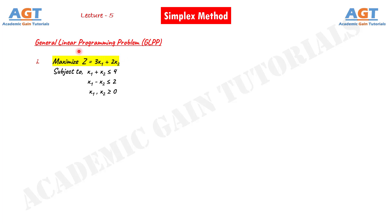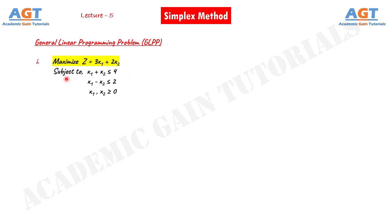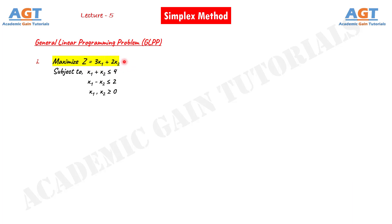The question is, in our previous lectures we have already seen that we can solve this problem using graphical method. Then why do we even need to use simplex method for solving the linear programming problems? If we look carefully, in the objective function we can see two decision variables x1 and x2, so in this case we can solve it with graphical method. But if there are three decision variables in the objective function, then we will not be able to solve the problem by graphical method, and we will have to solve that problem using simplex method.